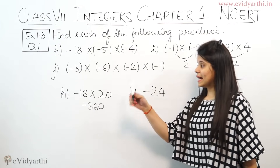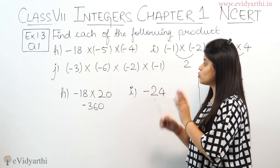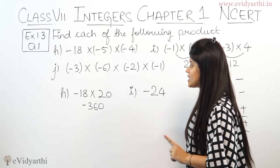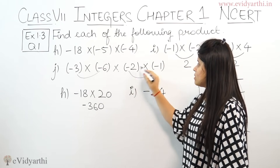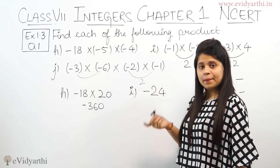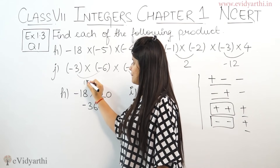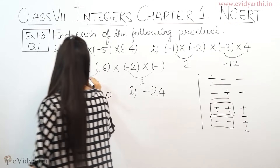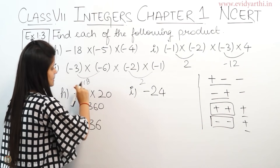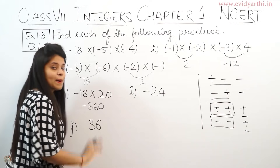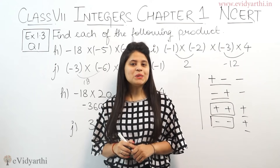The last part is minus 3 × minus 6 × minus 2 × minus 1. Again we have 4 integers, so make pairs. First pair: 2 × 1 = 2, minus × minus = plus 2. Second pair: 6 × 3 = 18, minus × minus = plus 18. Now 18 × 2 = 36, and both are positive so the answer is positive 36. This was Question 1; now let's come to Question 2.